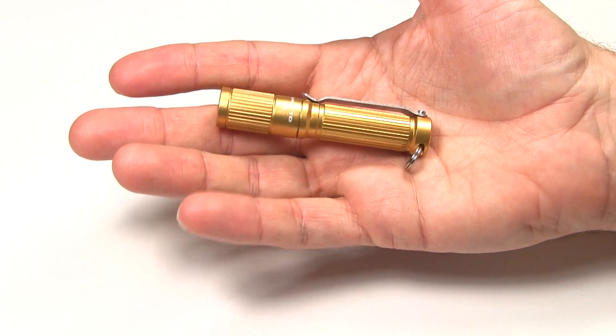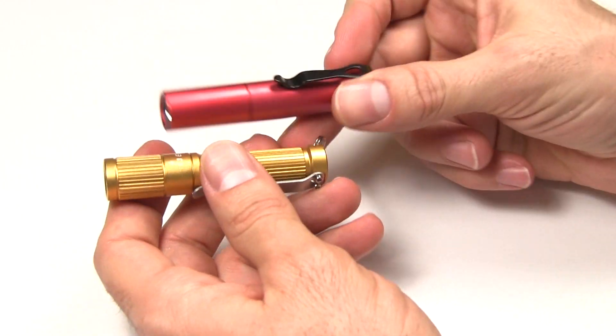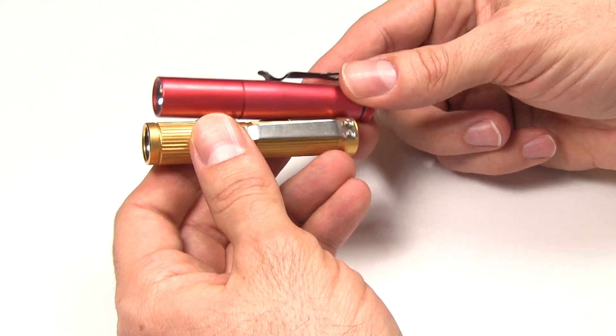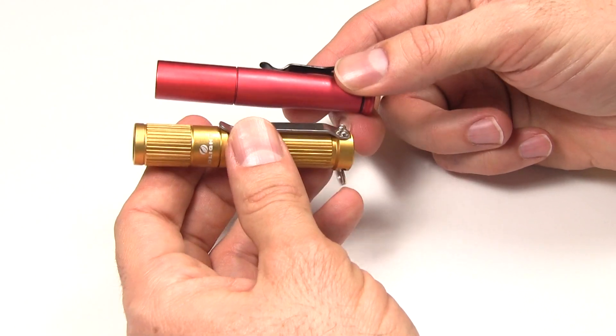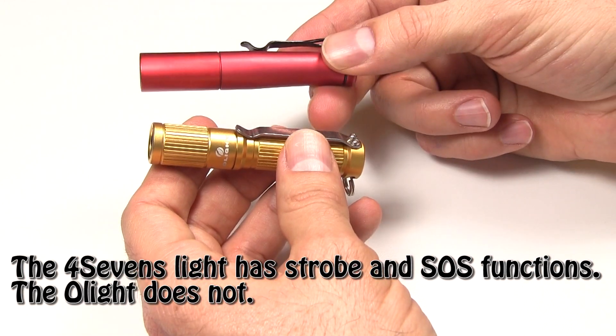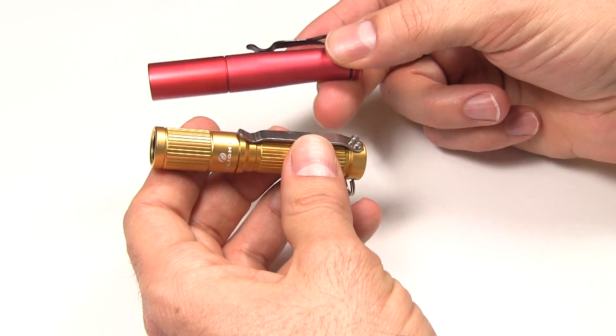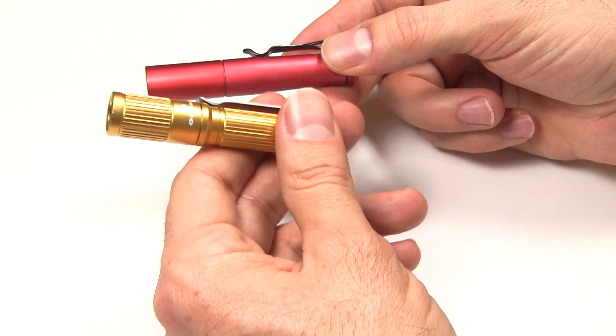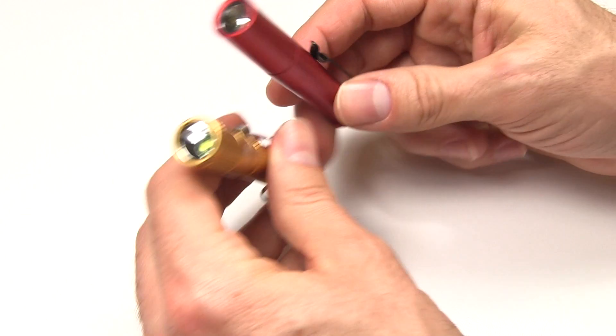Now, something this light will probably be compared a lot to is the 4.7's Preon 1. 4.7's and Olight are kind of, sort of, the same company, I think. These lights have similar outputs. The 4.7's goes 1.8, 8.5, 70 lumens, whereas this goes 2.5, 20, 70. They both have the same LED.